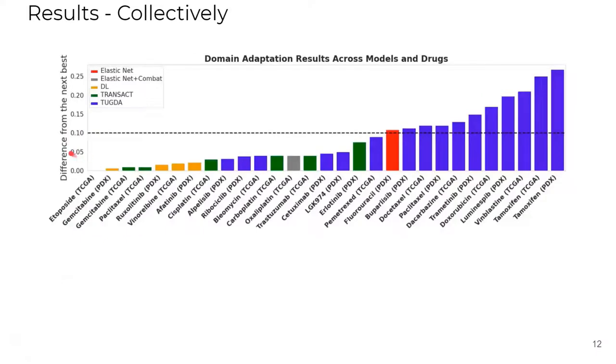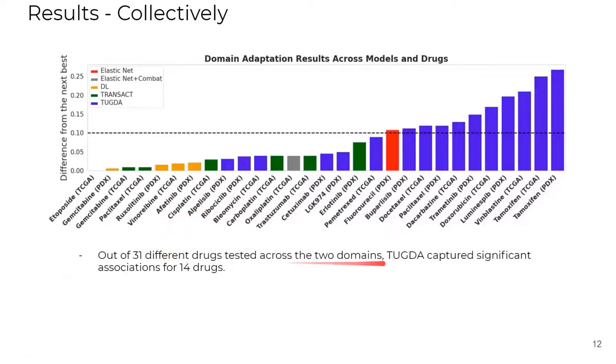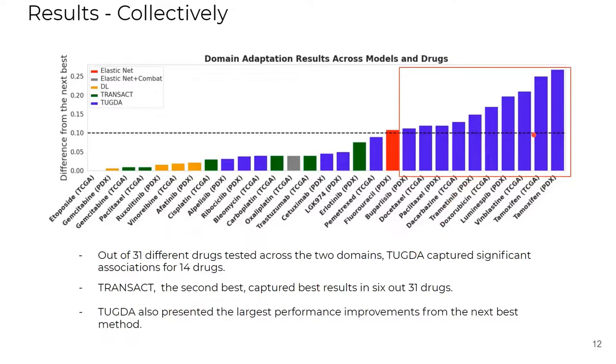So, out of these 31 different drugs tested across the two domains, TUGDA captured significant associations either by Spearman correlation or the largest effect size for 14 drugs. In comparison, the next best method, TRANSACT, captures significant associations for six. It's important to say that TUGDA also presented the largest improvements when compared to the next best method. As can be seen in the red box, where the top largest improvements are all coming from TUGDA.